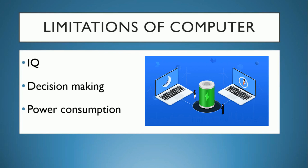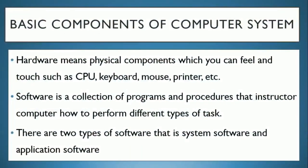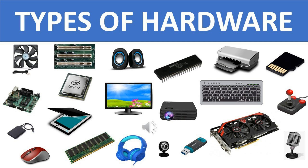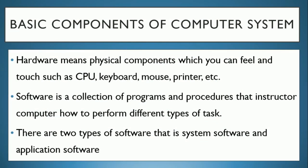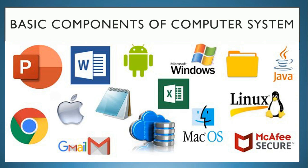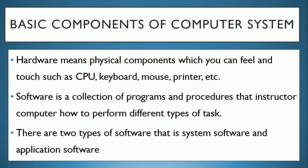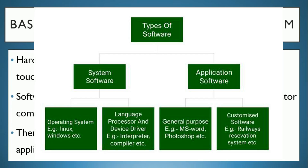Basic components of a computer system: Hardware means physical components which you can feel and touch, such as the CPU and keyboard — we have learned this from first and second standard. Software is a collection of programs with step-by-step instructions. There are two types of software: system software and application software.